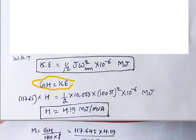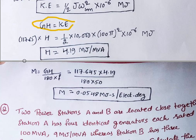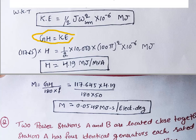Instead of KE, I will take it as G·H. In this equation we know all the things except H. Applying G = 117.65 MVA and finding out H, you will get H equals 4.19 megajoules per MVA.